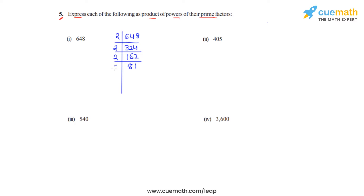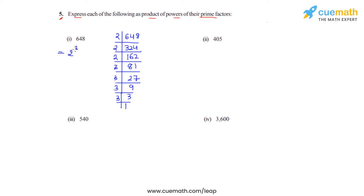Now 81 can be divided by 3 and that gives us the answer as 27. 27 on division by 3 gives us the answer as 9. 9 can again be divided by 3, that gives us 3, and 3 on division by 3 again gives us 1. So basically 648 can be written as 2 raised to 3 times 3 raised to 4.